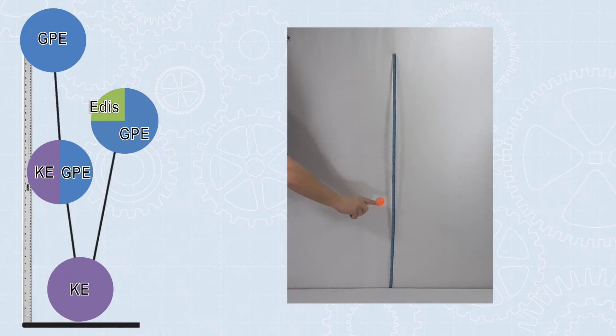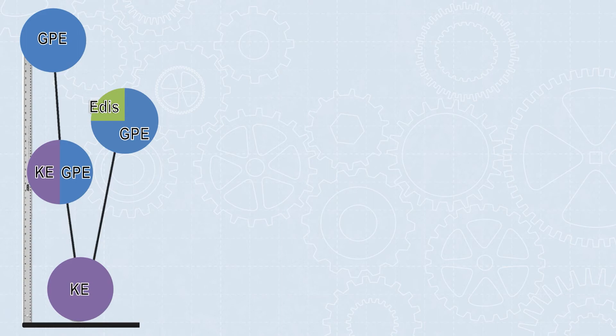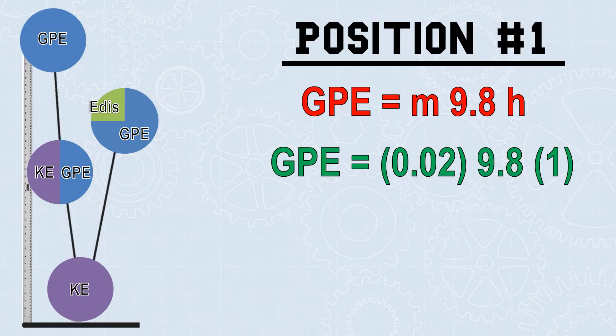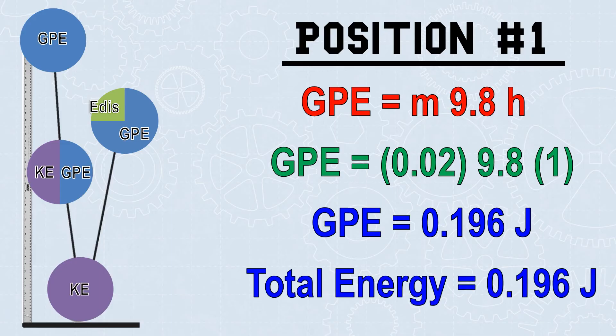Now that we've looked at this qualitatively and understand what forms of energy exist at each point, we can start looking at it quantitatively and add our numbers in. Once we understand the forms, we can apply the formulas at each position. Position 1 is all gravitational potential energy, so we can use the gravitational potential energy formula. If my bouncy ball had a mass of 0.02 kilograms and was dropped from a height of 1 meter, I would have a total gravitational potential energy of 0.196 joules. This is also my total energy, which means that every pie chart at every point throughout that motion has 0.196 joules of energy.